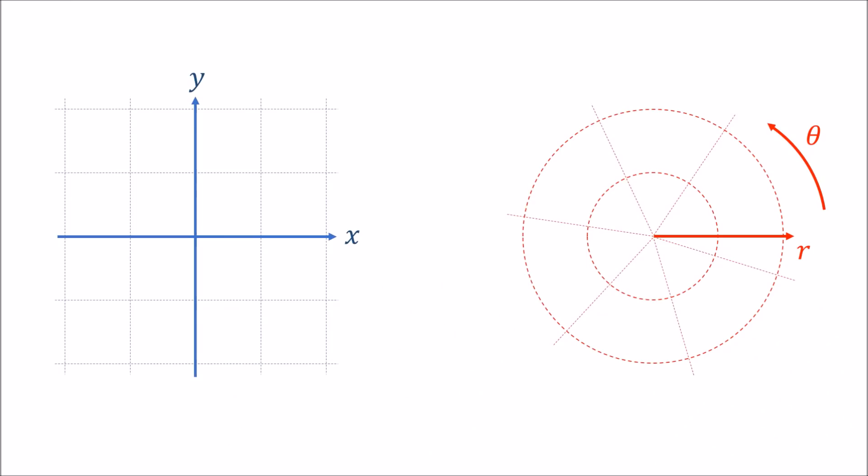So we have our two-dimensional Cartesian and polar coordinate systems, and the first step we need to take is to be able to express point P in both coordinate systems and be able to convert between xy coordinates and r theta coordinates easily.